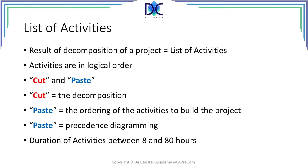As a rule, decomposition ends when the activities that we obtain at the bottom of the WBS are between 8 to 80 hours — meaning between 1 to 10 days, or 1 day and 2 work weeks.